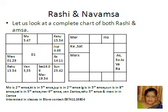Let us look at a chart — both the Rashi and the D9 or the Navamsha. Moon in Aries, Ketu in Gemini, Jupiter in Cancer, Lagna in Leo, Sun in Virgo, Saturn and Mercury in Libra, Venus in Scorpio, Rahu in Sagittarius, and Mars in Capricorn.